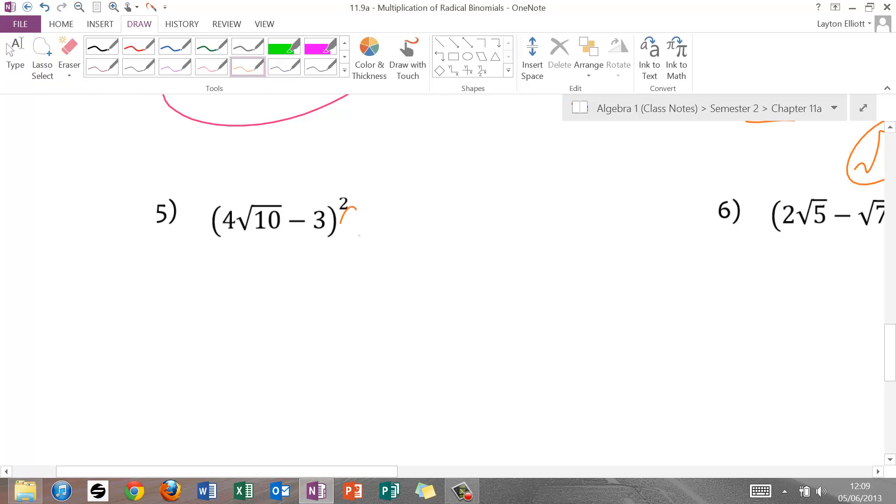Number 5. Oh, we have another square. So let's write this by itself. Or by its side. First, 4 times 4 is 16. Radical 10 times radical 10 is 10. Outer, negative 12 root 10. Inner, negative 12 root 10. And last, positive 9. Simplify, 160. Actually, that's 160 plus 9, so 169 minus 24 root 10.